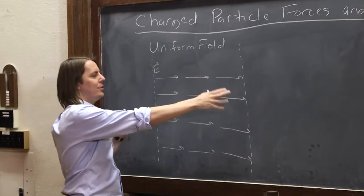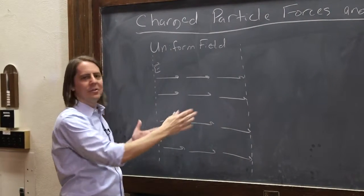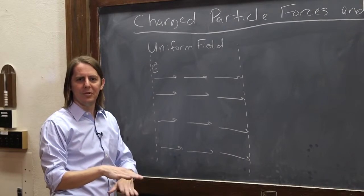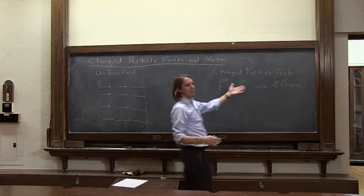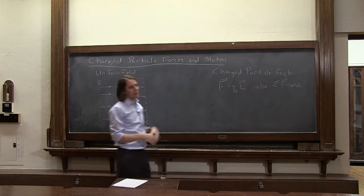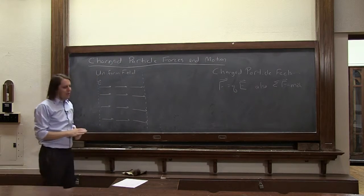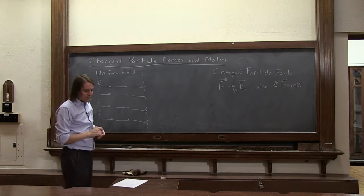So a uniform field is an interesting case because it's just like a gravitational field when you're near the surface of the Earth. When you say you're throwing a ball and you have gravity always pulling down at some acceleration, that's basically what you have with a uniform field. It's always pushing the charge in one direction. So let's just do an example problem just to get an idea.